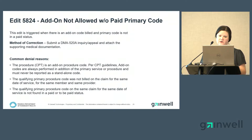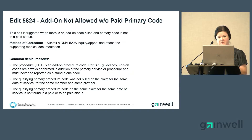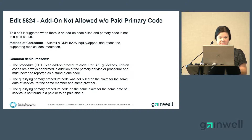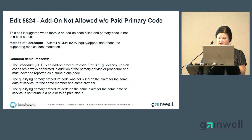Edit 5824: add-on not allowed without primary procedure code. This edit is triggered when the primary procedure code is not in a paid status. Your method of correction is to submit a DMA 520A appeal and attach supporting medical documentation. Common denial reasons include: the CPT code is an add-on code and per CPT guidelines, add-on codes are always performed in addition to the primary procedure and must never be reported as a standalone code. Also, the qualifying primary procedure code was not billed on the claim for the same date of service for the same member by the same provider, or the qualifying primary procedure code is not found to be in a paid or to-be-paid status.